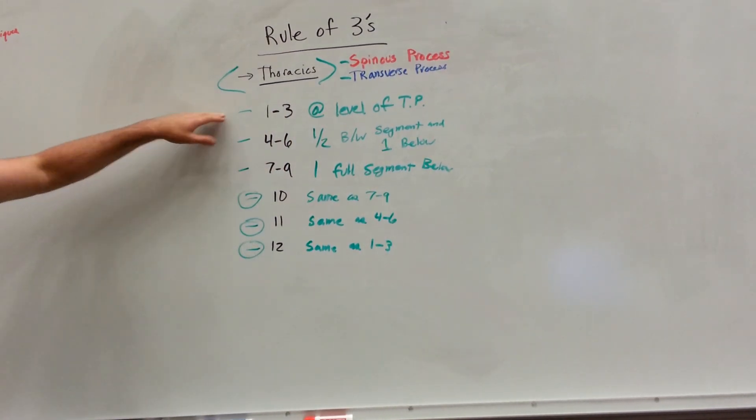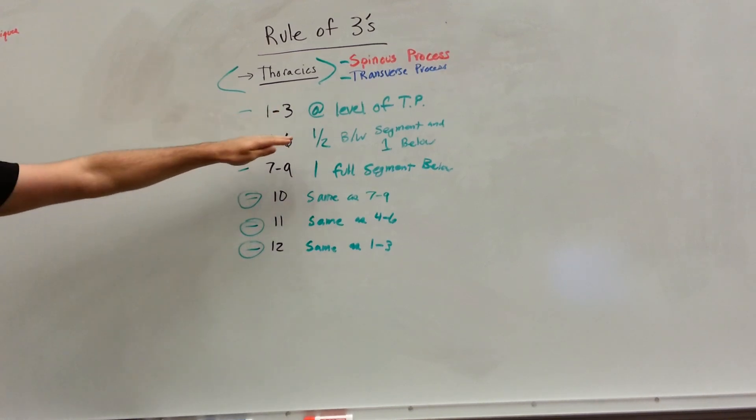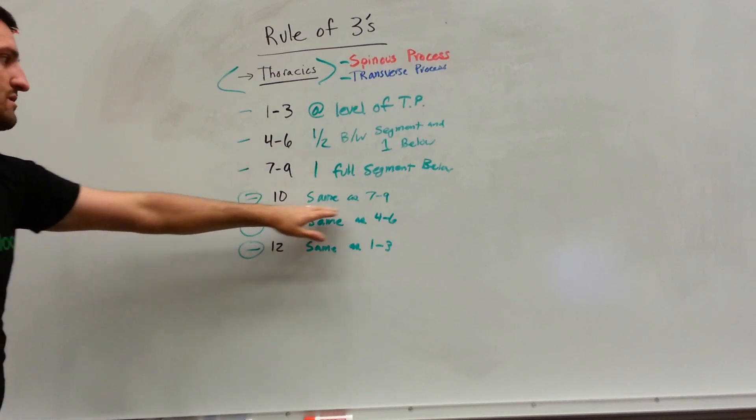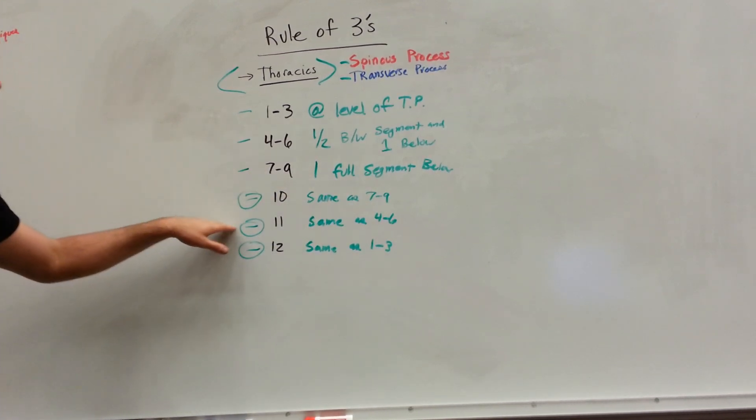So 1 to 3 at the level, 4 to 6 half, 7 to 9 a full below, 10 we're going to be the same as 7, 8, 9, 11 same as 4 to 6, and 12 same as 1 to 3.